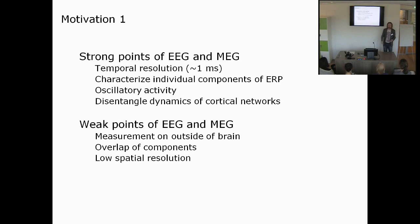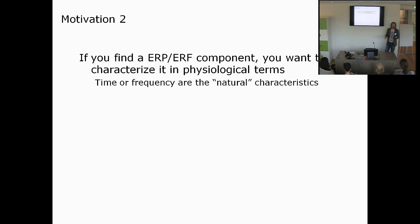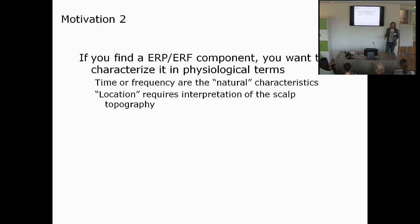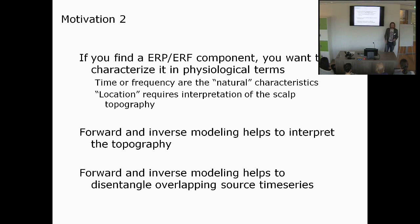A second motivation for doing source modeling is that if you find an ERP or an event-related field, you want to characterize it in physiological terms. Time and frequency are the natural characteristics of your recording and directly relate to cortical activity, whereas location requires an interpretation of the scalp topography. Forward and inverse methods are available to help you interpret this topography, and they also help you disentangle the time series — especially important if you are interested in activity from multiple sources or networks.